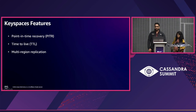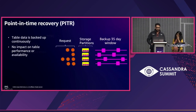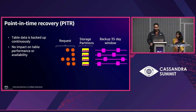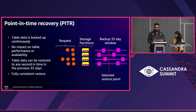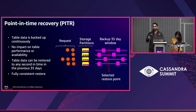My name is Rohan Gupta and I'm a software engineer on the Amazon Keyspaces team. I'll be walking you through some of the key features offered by Amazon Keyspaces and how we build them. Starting with point-in-time recovery, or PITR. PITR helps you recover your data in case of accidental deletions or updates, with absolutely no impact on performance, scalability, or availability. You can restore your table to any second in time within the past 35 days.